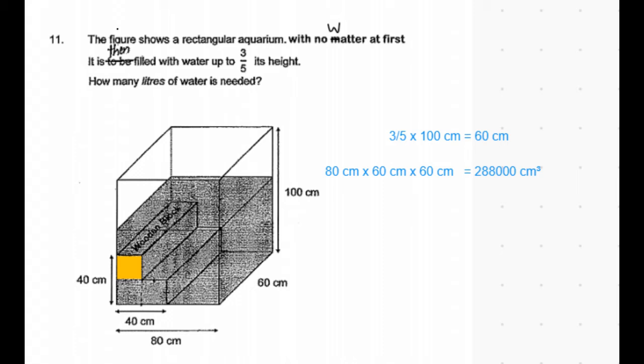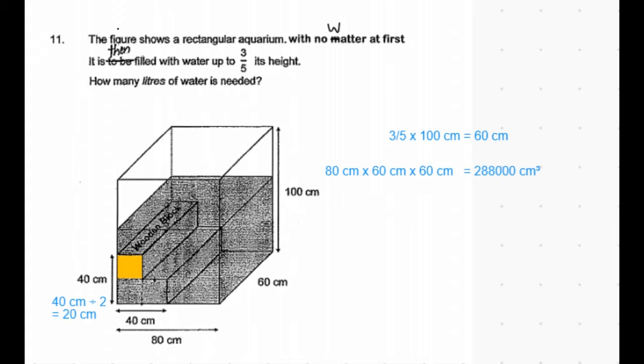The length of the two blocks is 40 centimeters. So the length of one block is 40 divided by two which is equal to 20 centimeters and so is the height. The height of two blocks is given to be 40 centimeters. So the height of one block is 20 centimeters.